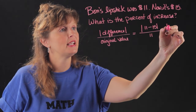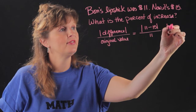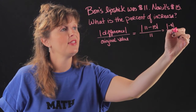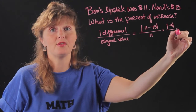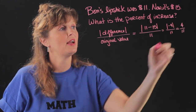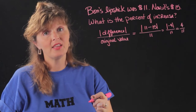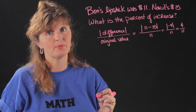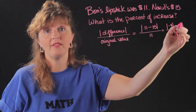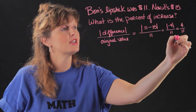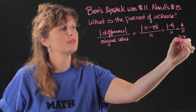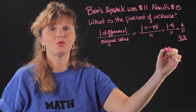11 minus 15 is negative 4, and the absolute value of negative 4 is 4. So that's 4 over 11. Then we convert that to a percentage, which means we divide 11 into 4, and that gives us 36% increase.